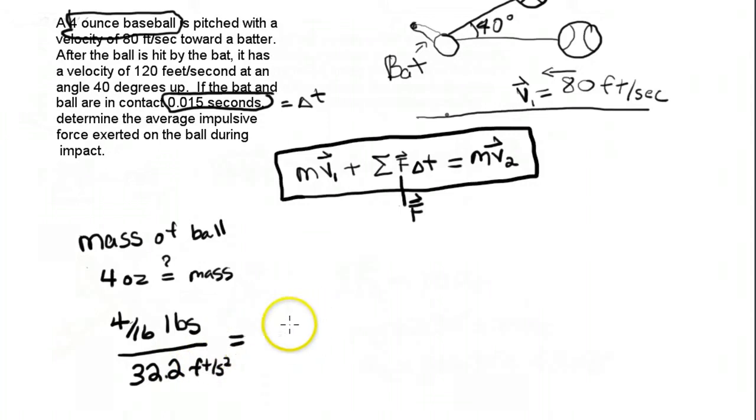This works out to be, let me write down, 0.0078 slugs.